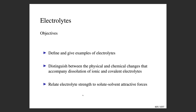In this video we're going to talk about electrolyte solutions. We'll go through some different examples of electrolytes, and we want to be able to distinguish the types of changes that accompany the dissolution process when we form an electrolyte solution from an ionic electrolyte versus a covalent electrolyte. Ionic electrolytes undergo a physical dissociation; covalent electrolytes undergo a chemical dissociation. We'll also spend some time talking about intermolecular interactions between the solute and solvent.